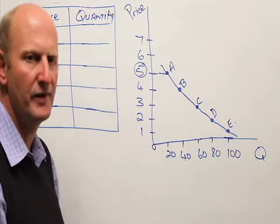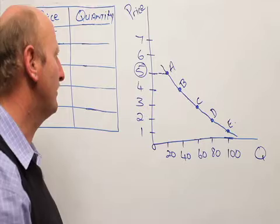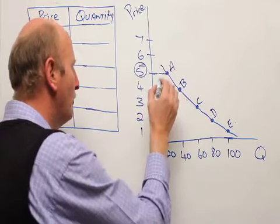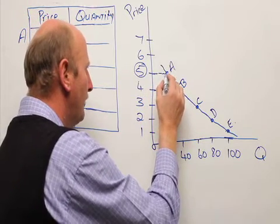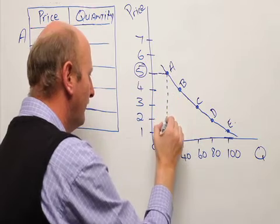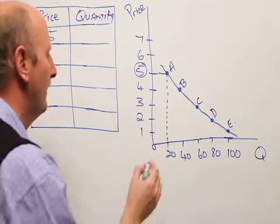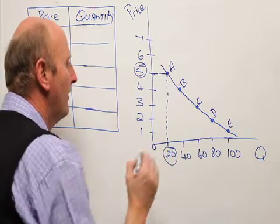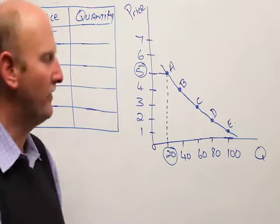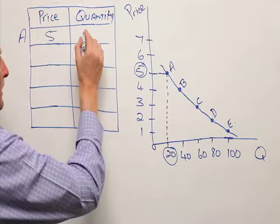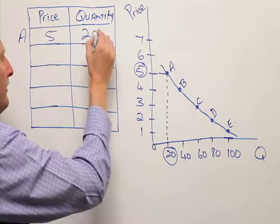To find the quantity values that correspond with a price of 5 grand at point A, I draw a line downwards to the quantity axis. And here you find that the quantity that corresponds with point A is 20. So in my table next to 5 grand, I write the quantity 20.